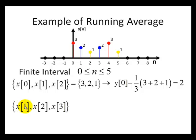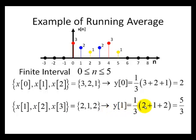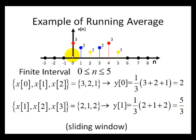Here we'll do another example — we'll find Y1. In this case we need the values 2, 1, and 2 corresponding to this set. So 2 plus 1 plus 2 is 5, giving us a result for Y1 of 5 thirds. This running average is also known as a sliding window of fixed length 3.